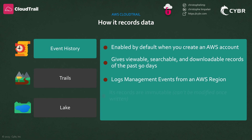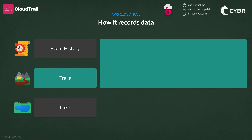These records are immutable, meaning that they can't be modified by anyone once they've been generated. This is very important because it means you can trust the data — it hasn't been tampered with after it was recorded. And the best part about event history is that it's completely free. Next, and this is what most people know about CloudTrail because it's a core function of the service, we can record data by creating trails, and we'll take a look at how to create our first trail very soon in the next section.